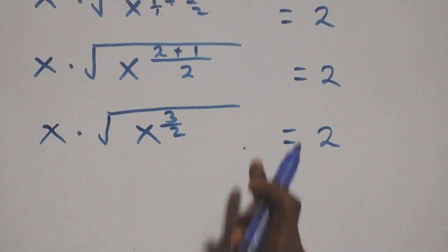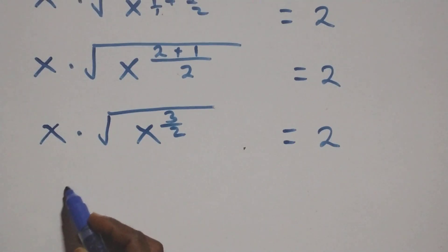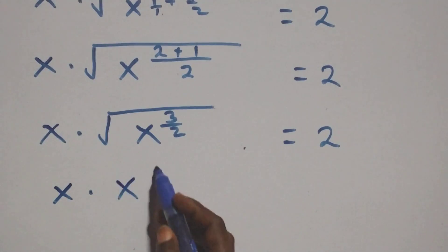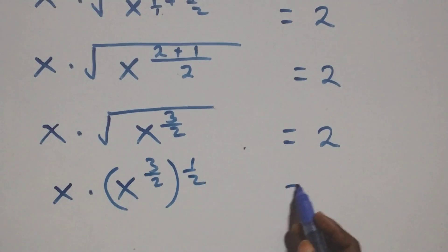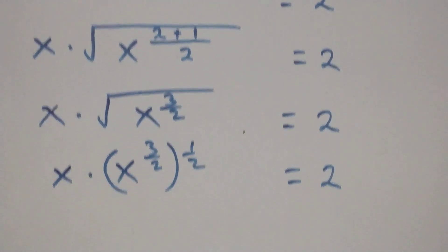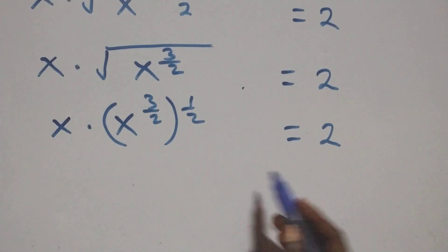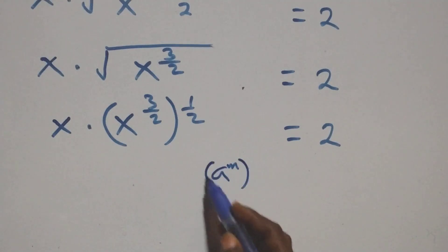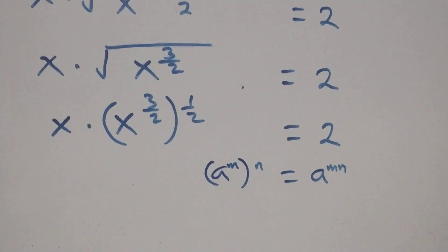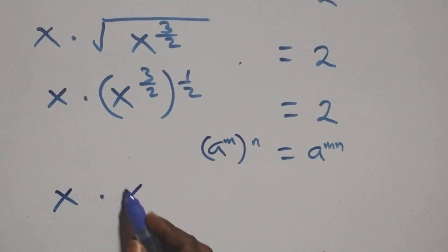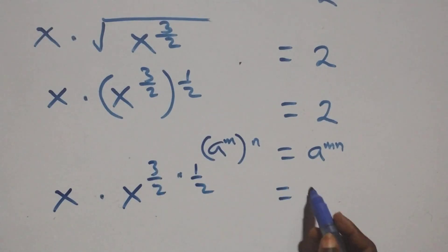Now we rewrite the square root of x raised to power 2. We have x raised to power 2, then raised to power 1 half, equal to 2. This follows from: when we have a raised to power m, raised to power n, it's the same thing as a raised to power mn. So here we have x times x raised to power 3 over 2 times 1 over 2 equals to 2.